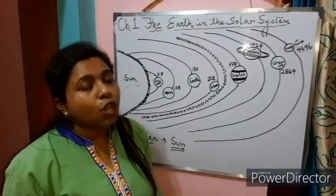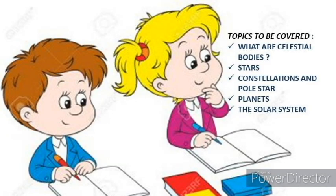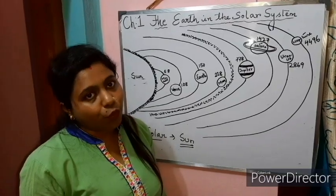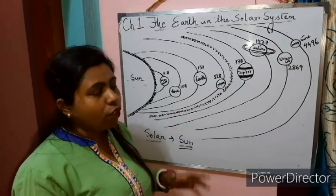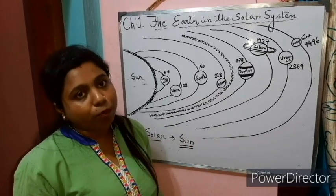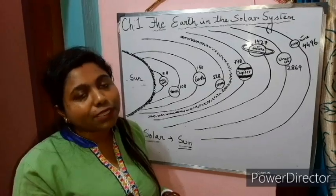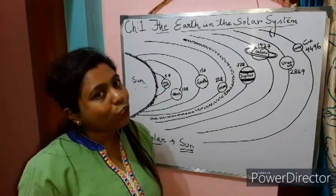Today, what we learned: we learned what are stars, what are celestial objects, what are planets, what are constellations, what is the solar system, and also what is a pole star. In the next video, we will go ahead with the next part of the chapter. I hope all of you understood. If you have any problem, contact me in the WhatsApp group. Thank you for the day.